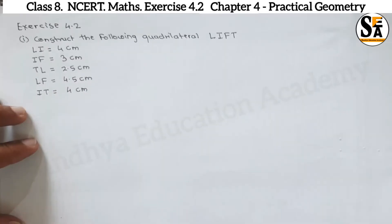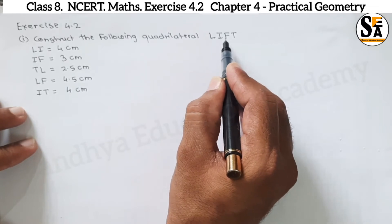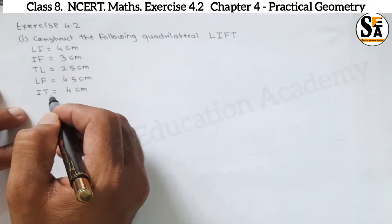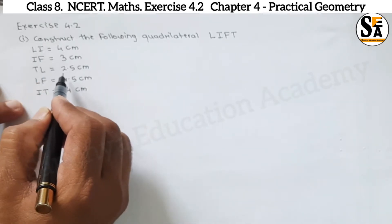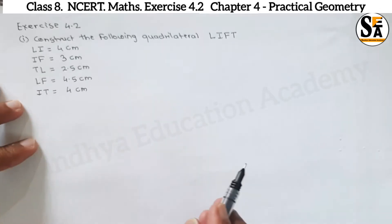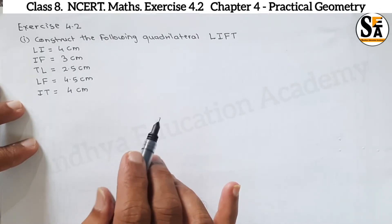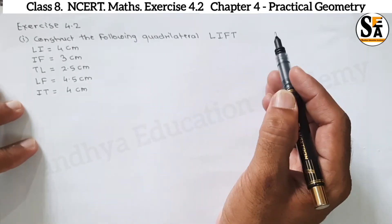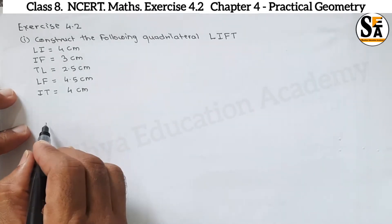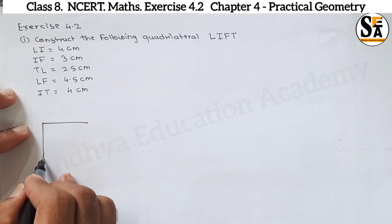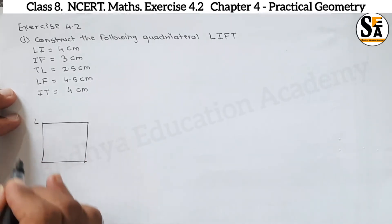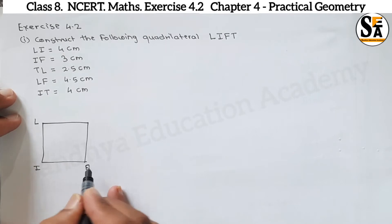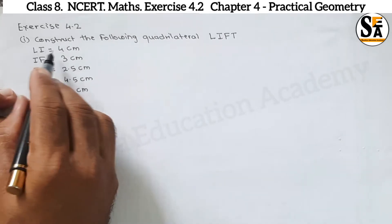These dimensions are given for quadrilateral LIFT: dimensions of three sides are given and dimensions of two diagonals are given. With the help of this we will draw quadrilateral LIFT. So just draw a rough sketch of this quadrilateral LIFT for our better understanding. Put the vertices L, I, F, T.